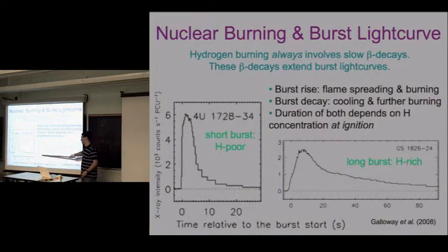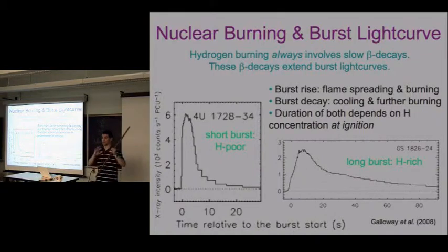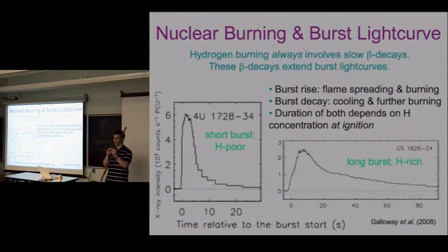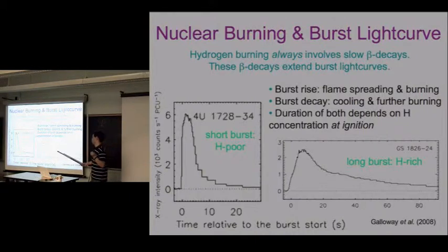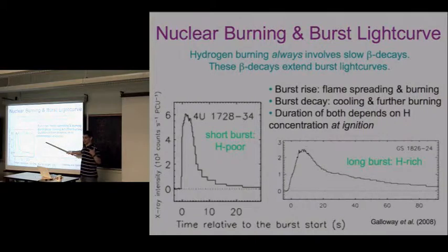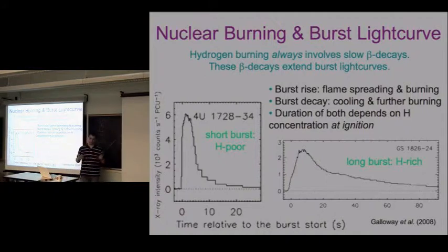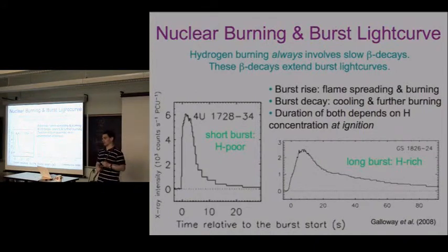The rise gets complicated because you have two competing factors: flame propagation - the timescale for the flame to propagate from an ignition point over the entire neutron star - and the nuclear burning timescale. If flame speed is fast relative to nuclear burning timescale, the rise is set by nuclear burning, which is slow when there's hydrogen burning and therefore many beta decays. In the short burst case, the flame speed itself may be the limiting factor.